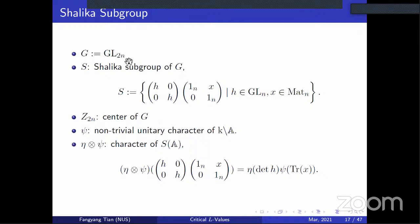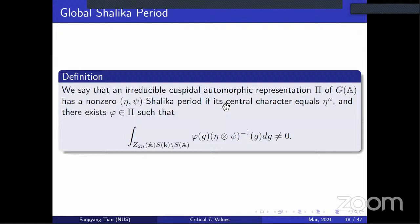Because these statements involve the Shalika period, let's recall it. Our group from now is GL(2n), and the Shalika subgroup Q is defined as a semi-direct product of GL_n and a unipotent subgroup isomorphic to the n by n matrices. Z(A) is the center of GL(2n). We take xi a non-trivial unitary character and define a character of the adelic points of Q. We say Pi has a non-zero Shalika period if this integral is non-zero.